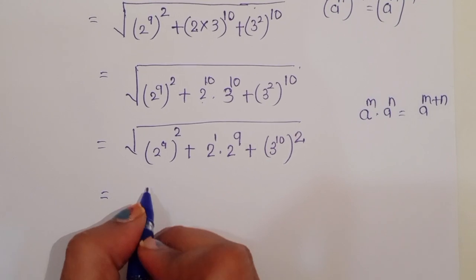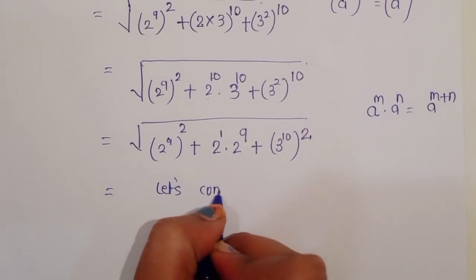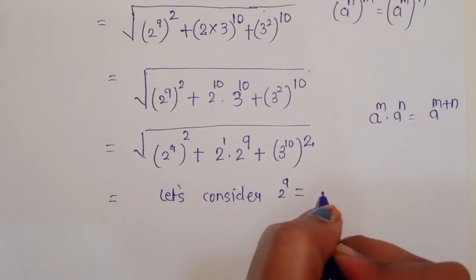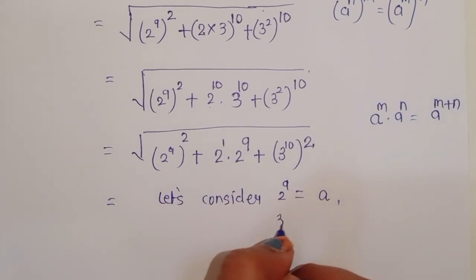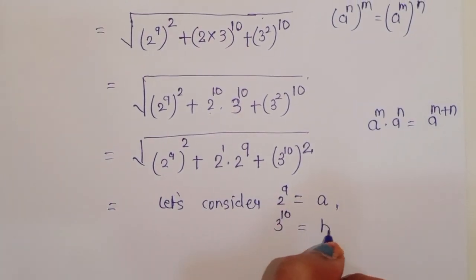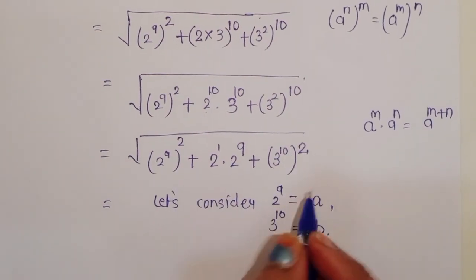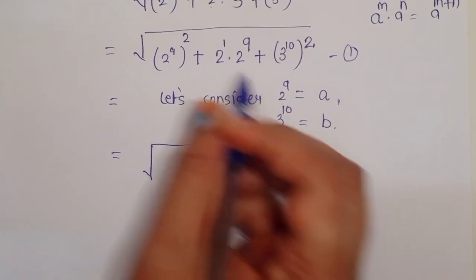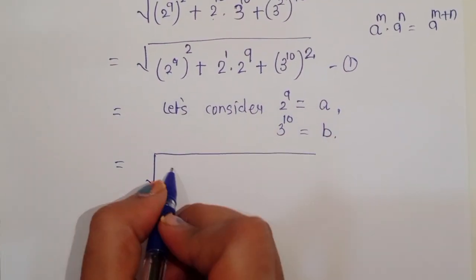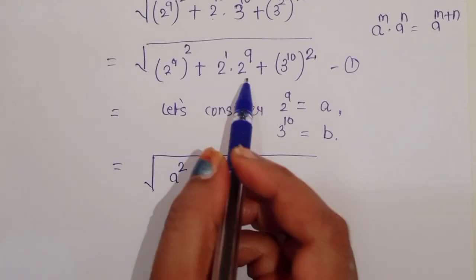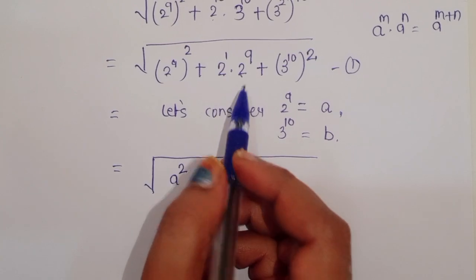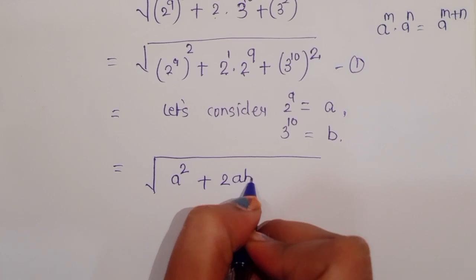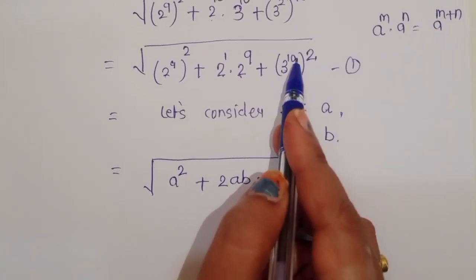Now, let's consider 2 power 9 equal to a and 3 power 10 equal to b. By putting these values into equation 1, we get: 2 power 9 is a, so we can write a squared plus 2 power 9 into 2 power 1, which gives us 2ab, plus 3 power 10 which is b squared.